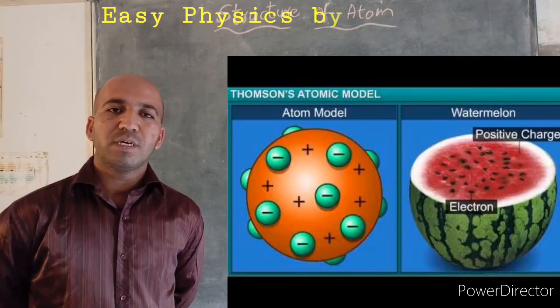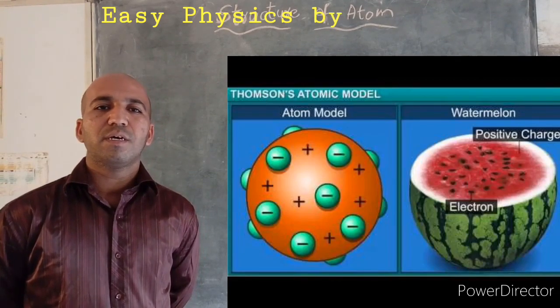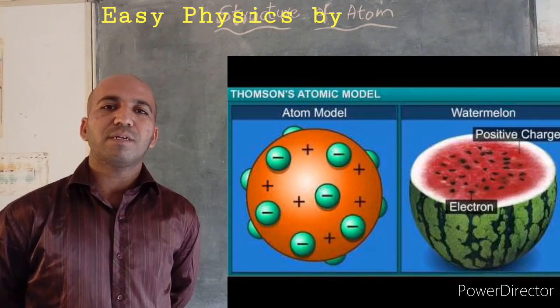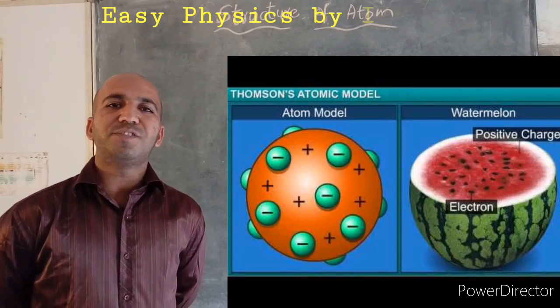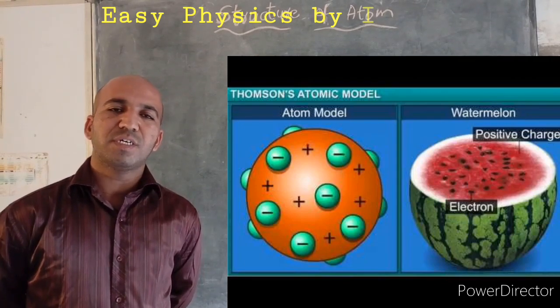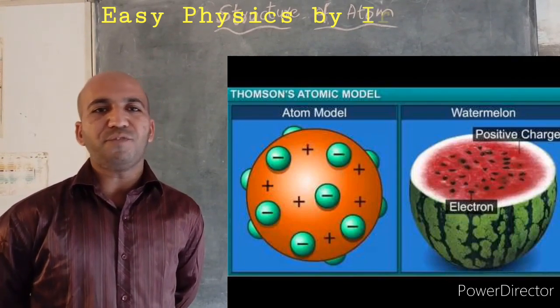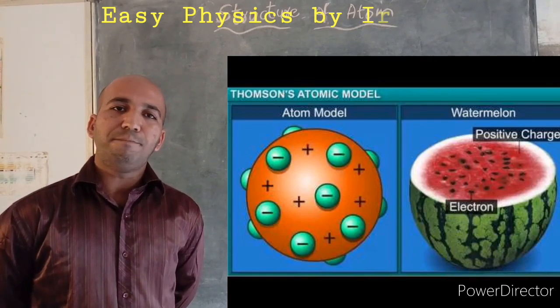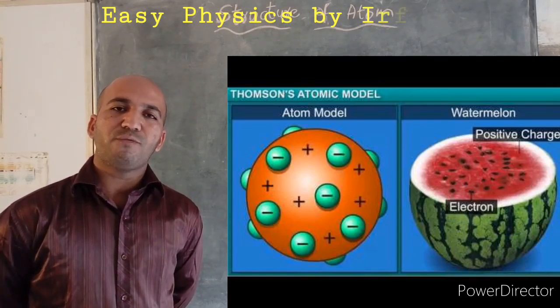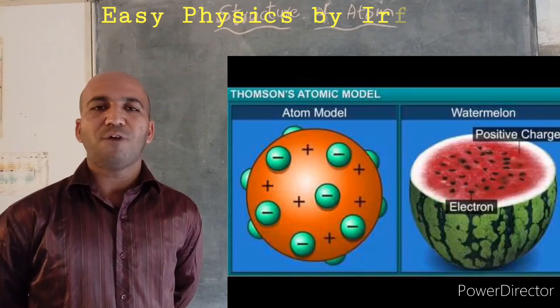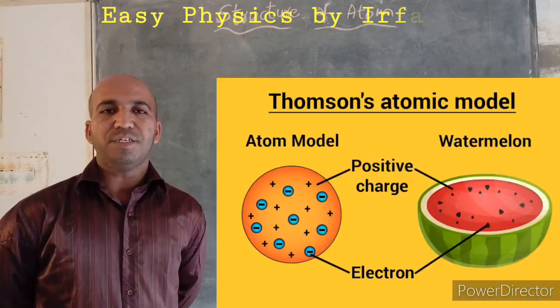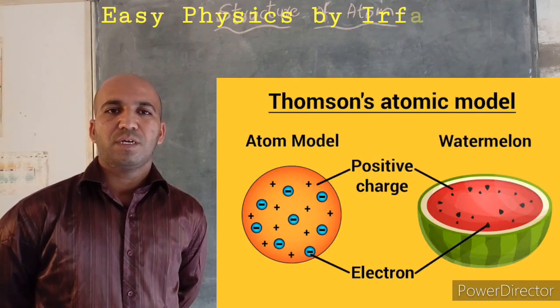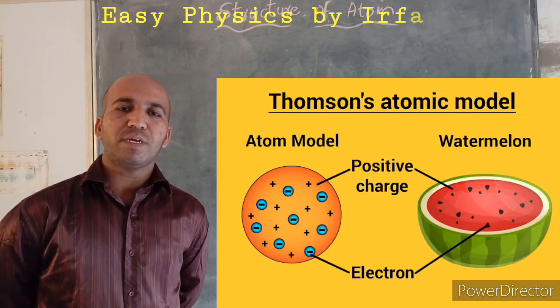We know that inside the watermelon, most of the watermelon consists of the plum and the seeds, the black seeds are embedded in between the plum. So that's why he compared the structure of an atom with a watermelon, but it is proven to be wrong.